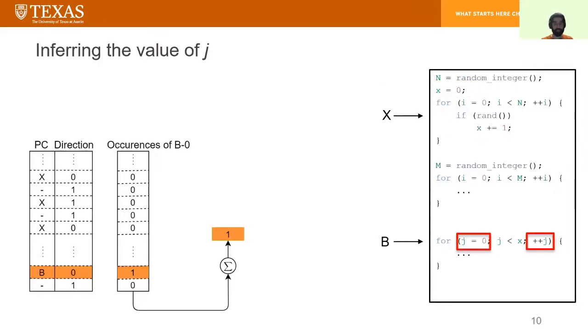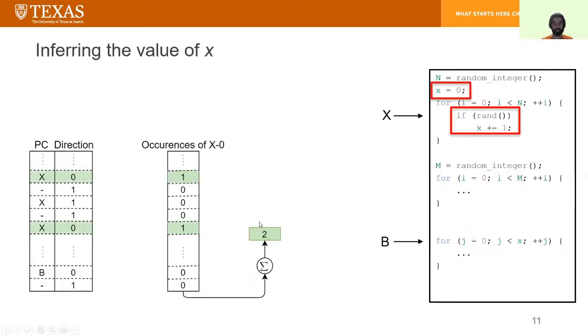To infer the branch counts, we can have a very simple piece of hardware. We would have a filter that would look for not taken instances of Branch B and would produce a 1 and otherwise it would produce a 0 for each branch in our history. And then we would simply add up all these occurrences and put the result in a register. The value of this register equals the value of variable J. Similarly for variable X, we would identify the instances of not taken Branch X, add up all the occurrences and now we have the value of variable X in a register.